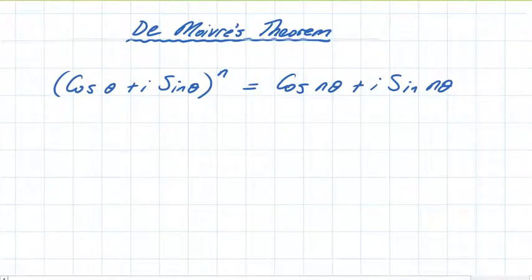Now, the proof of this theorem is shown elsewhere in the course under the section called Proof by Induction. But for now, just let's accept the result of De Moivre's Theorem. That is, cos theta plus i sine theta to the power of n is cos n theta plus i sine n theta.